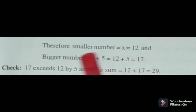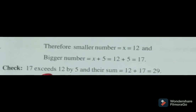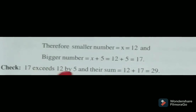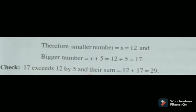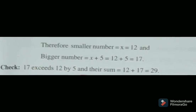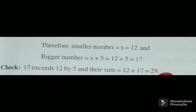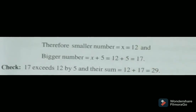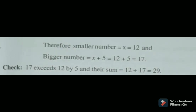Let us check: 17 minus 12 is equal to 5, and the sum 17 plus 12 is equal to 29. So our solution is correct.